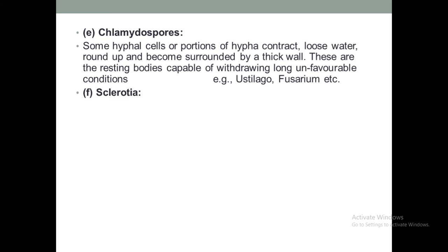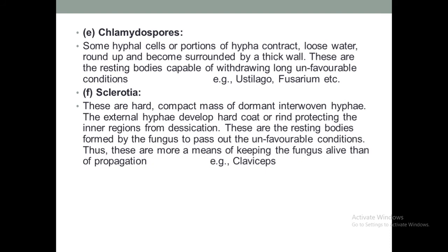The next type of vegetative reproduction is sclerotia. These are hard, compact masses of dormant interwoven hyphae. The external hyphae develop a hard coat for protection, keeping the inner region from desiccation. These are resting bodies formed by the fungus to survive unfavorable conditions. They are more a means of keeping the fungus alive than of propagation — for example, Claviceps.